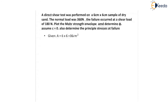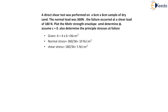The given data: area of cross section equals 6 by 6 equals 36 cm square. Normal stress equals normal load divided by area, that is 360 divided by 36 equals 10 N per cm square. Shear stress equals shear load divided by cross sectional area, that is 180 divided by 36 equals 5 N per cm square. So at a normal stress of 10 and shear stress of 5, failure has occurred.